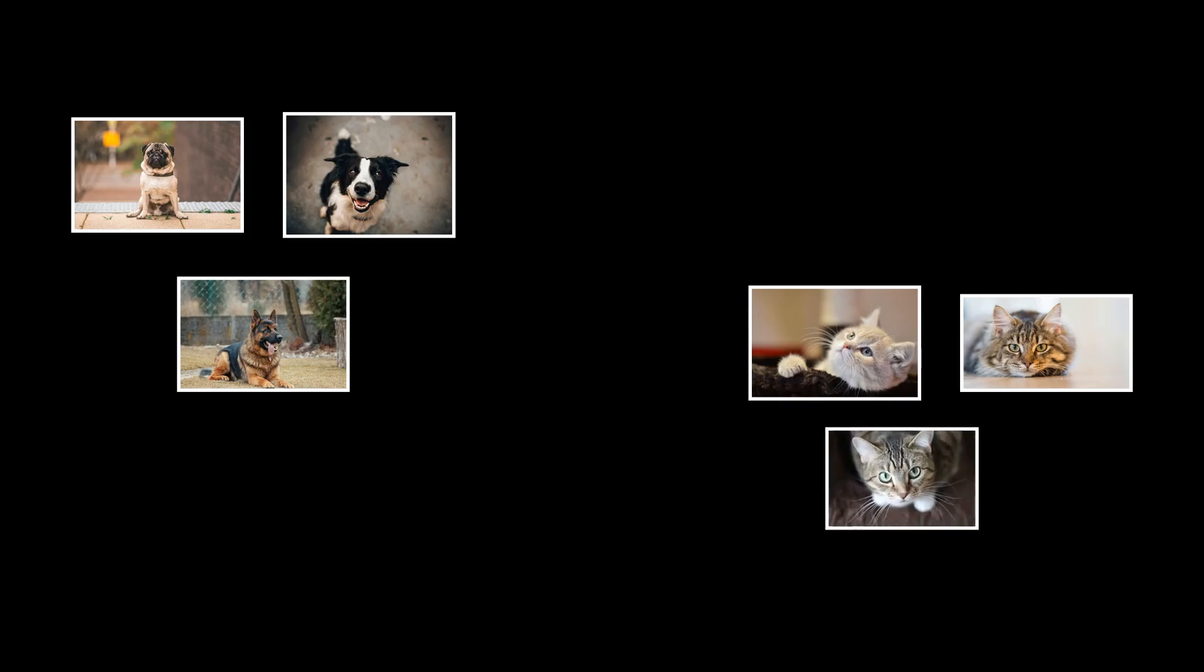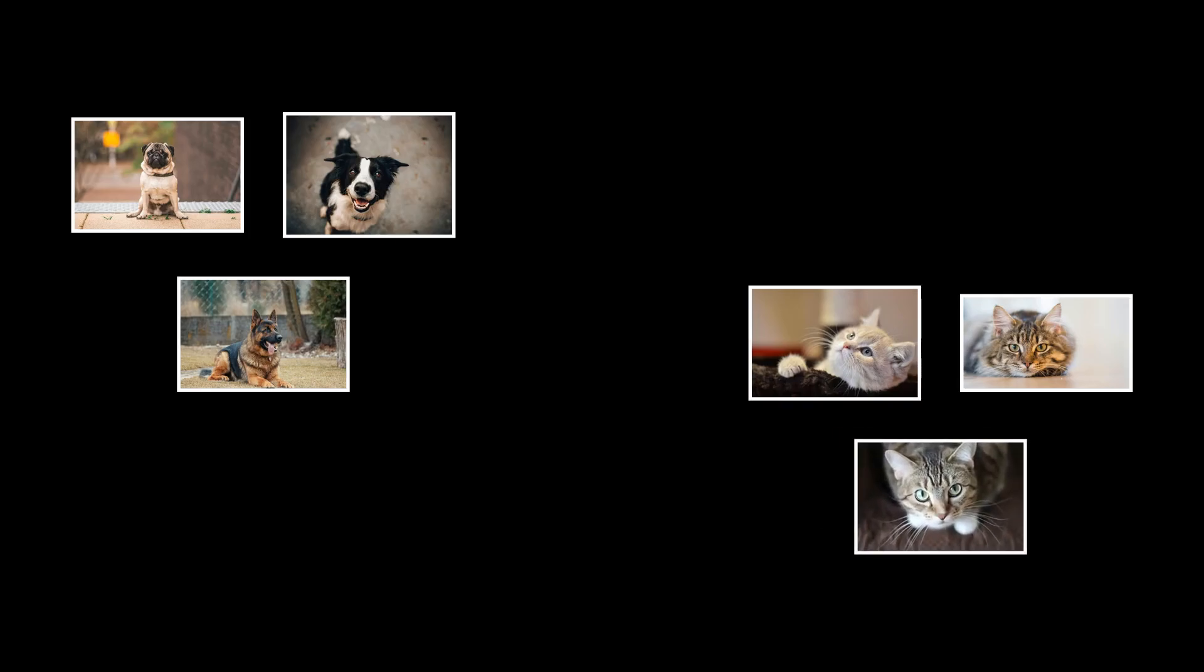For example, if I show you enough images of dogs and cats, you can figure out that they're different, even without knowing their names. This approach of finding patterns without explicit labels is called unsupervised learning, a technique used in algorithms like K-Means or TSNE, which we covered in a previous video.